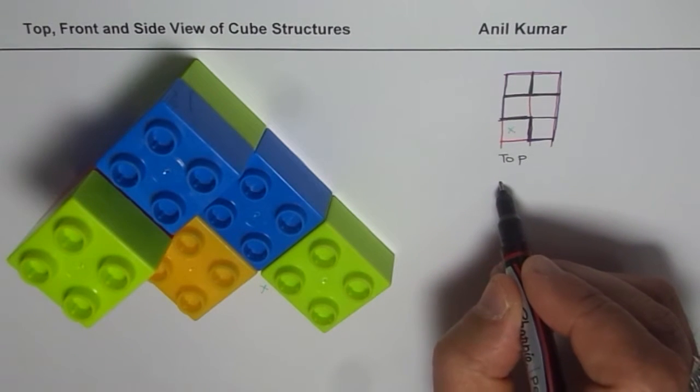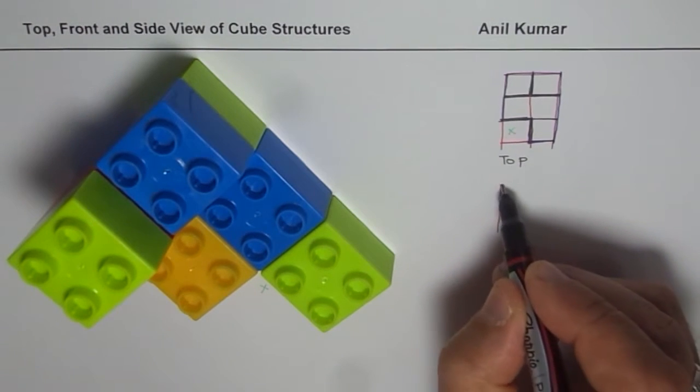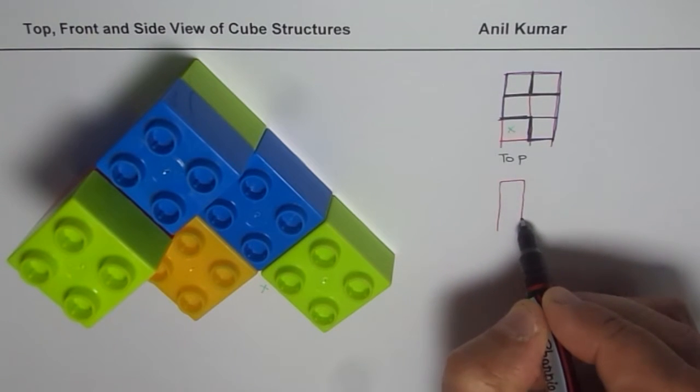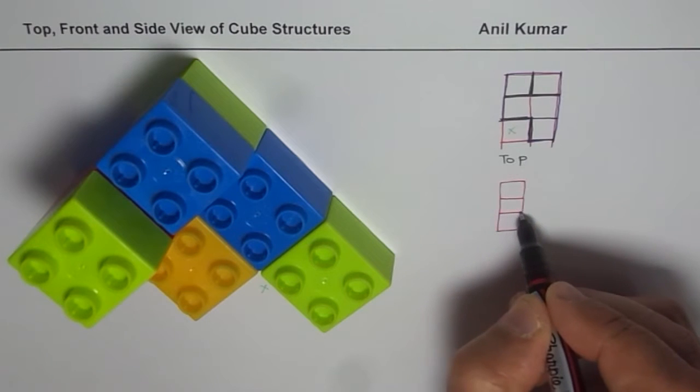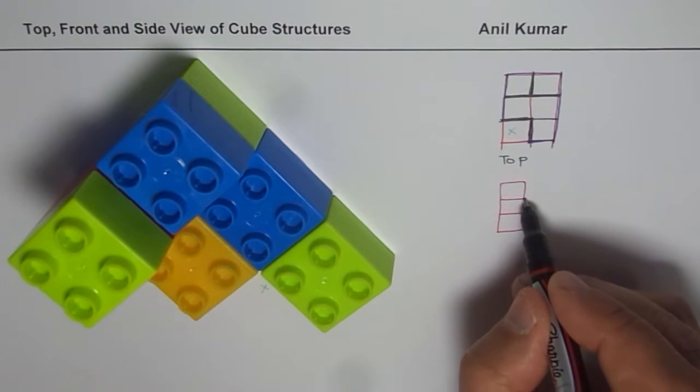So what you see here is kind of, if you draw here three layers. So you see three layers here, one, two and three. And on this side, you only see two layers.